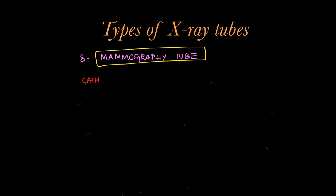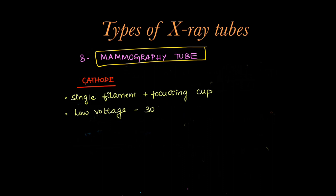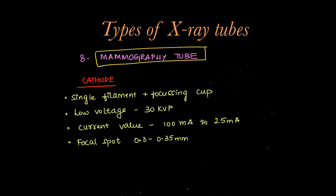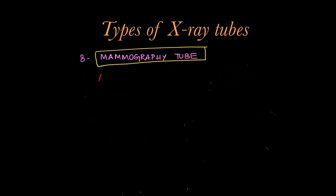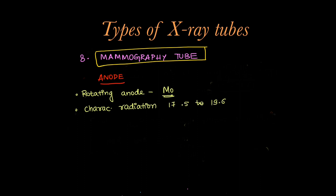Those were the differences in the anode of the mammography tube. Coming to the cathode: it does not have a double filament — only a single filament and a single focusing cup. It runs on low voltage of 30 kV and filament current from 100 to 25 mA. The focal spot is the smallest among all x-ray tubes at 0.3 to 0.35 mm. Summarizing the anode differences: rotating anode with molybdenum target, characteristic radiation from 17.5 to 19.5 kV, and anode angle kept at 0 to 10 degrees, with an average of around 6 degrees.